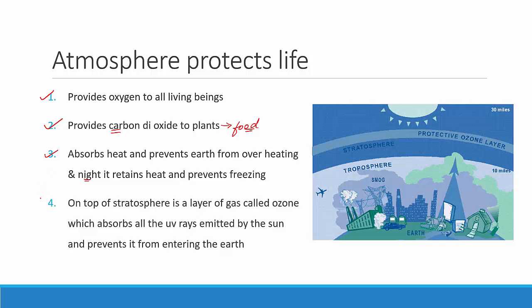The last and most important point is that right on top of the stratosphere, there is a layer of gas called as the ozone. This region right above the stratosphere is what we call the ozone. The sun produces certain harmful radiations called UV radiation. These UV rays are very harmful to living organisms — they can kill living organisms. The ozone absorbs all the UV rays emitted by the sun and prevents them from entering the earth, keeping us safe from these harmful UV radiations.